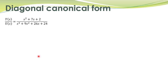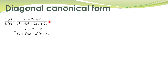We also talk about another important canonical form representation: the diagonal canonical form. To demonstrate this procedure, we again start with the same transfer function and rewrite it in another format to obtain the diagonal canonical form representation.